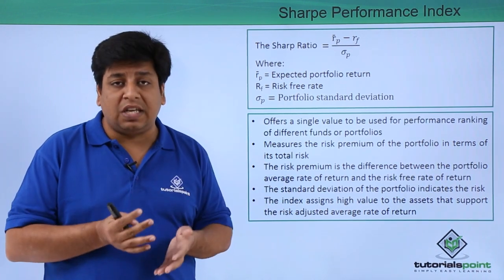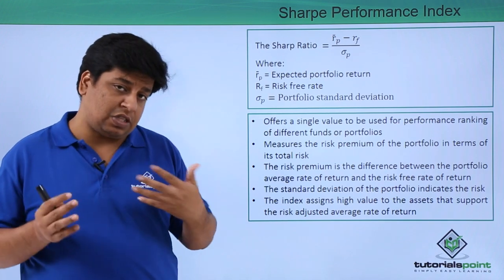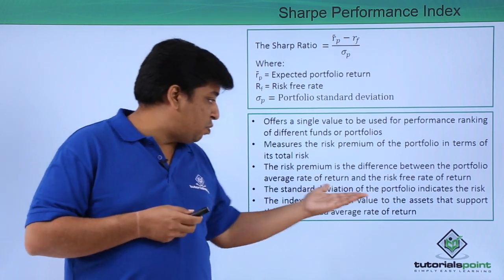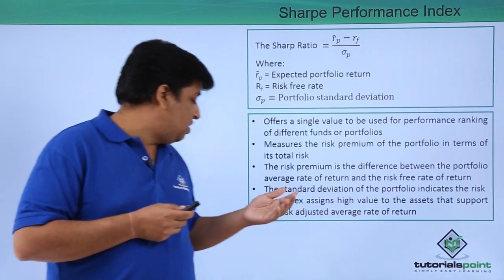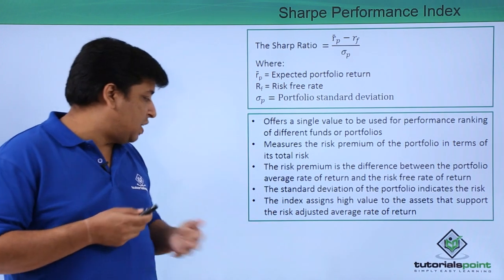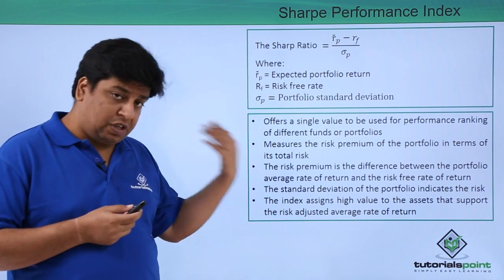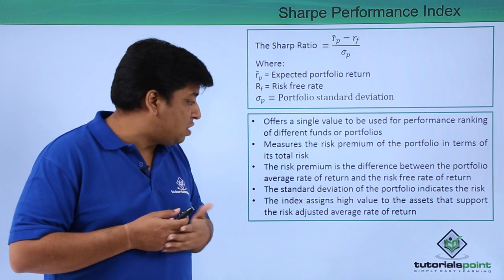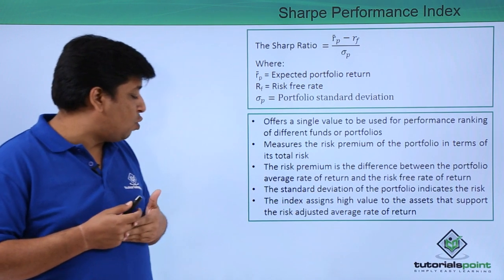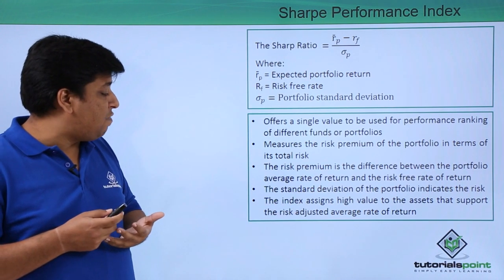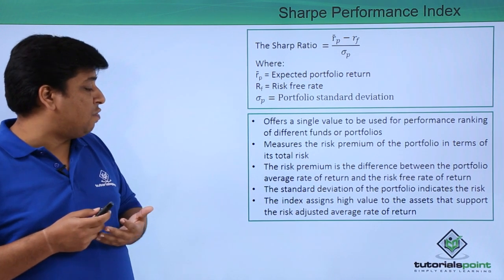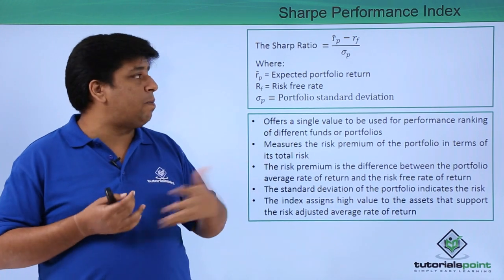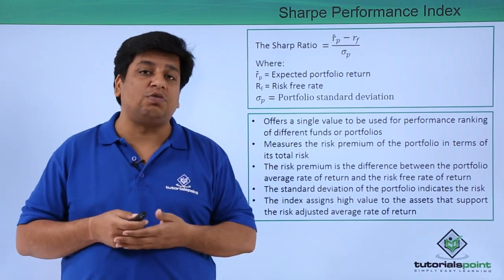The standard deviation of the portfolio indicates the risk, which is exactly what we calculated. The index assigns high value to assets that support the risk-adjusted average rate of return. That is, in short, what the Sharpe Performance Index is all about.